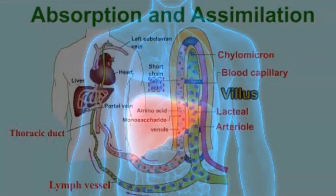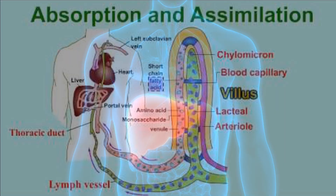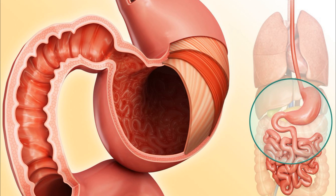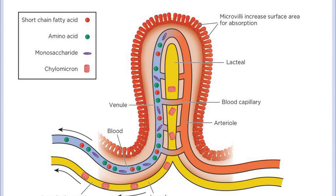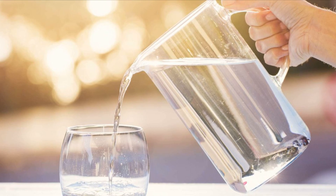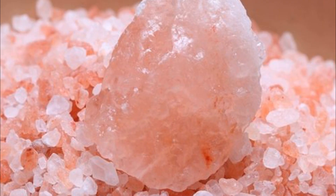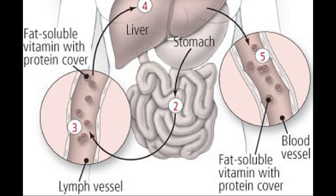Absorption and Assimilation. Absorption is a process by which various substances pass across a layer of cells into the internal environment of the body. Due to absorption, the body is supplied with all the nutrients it requires for its activities. Absorption occurs in all parts of the digestive tract, but the main site of absorption is the ileum. Water, mineral salts, and vitamins are absorbed into the blood throughout the length of the small intestine. Water and mineral salts are also absorbed in the stomach and in the large intestine.